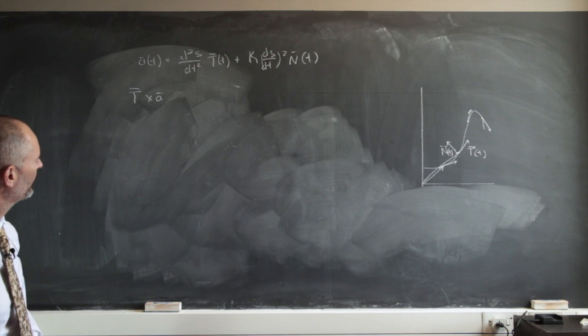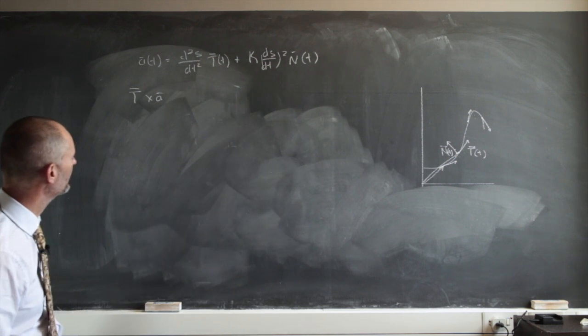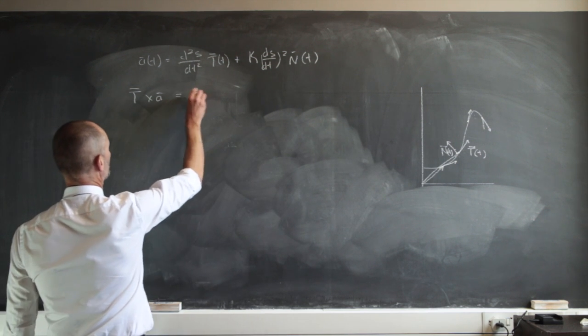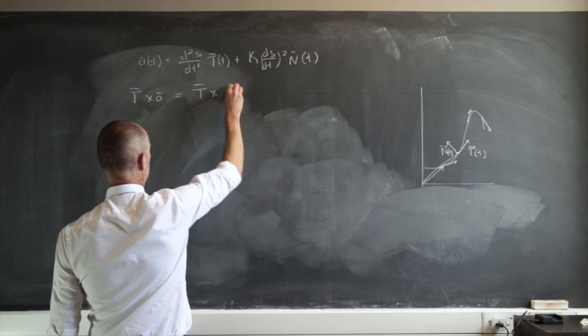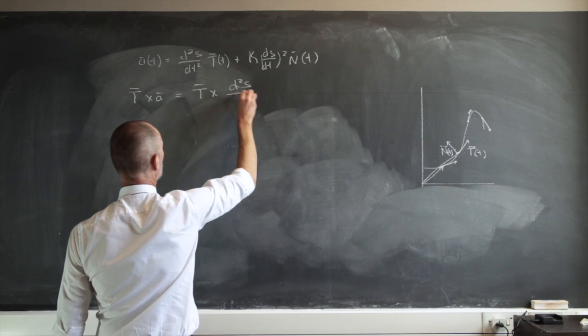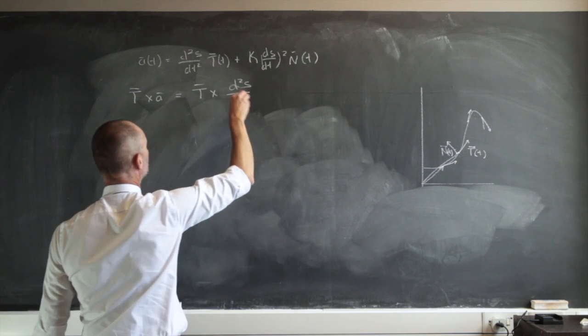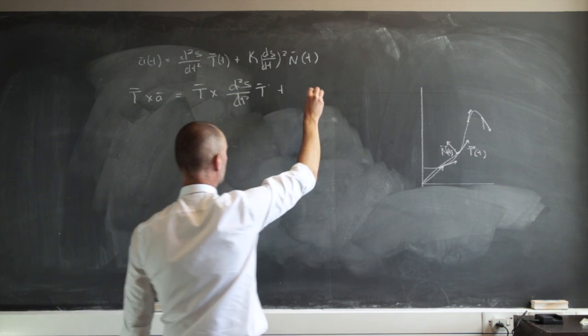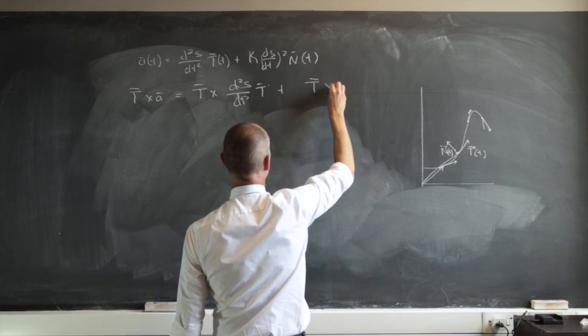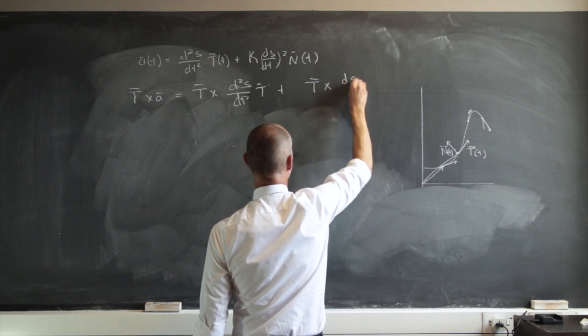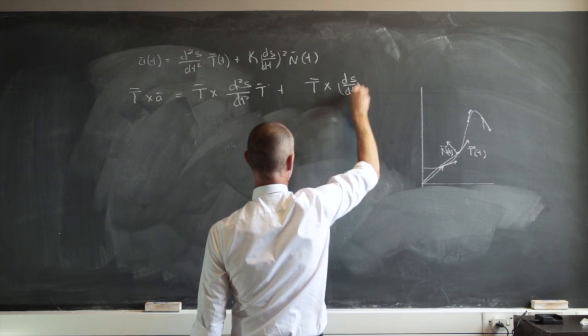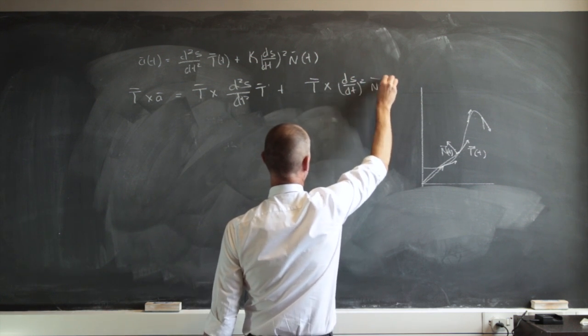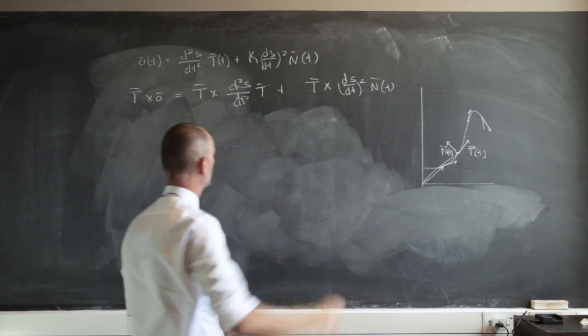Now what's the cross product of this sum of these two components? Well that's going to be the cross product of the first one, d²s/dt² T'(t) plus I'm going to have here T cross product ds/dt squared N of t. Oh so I've put the T there.